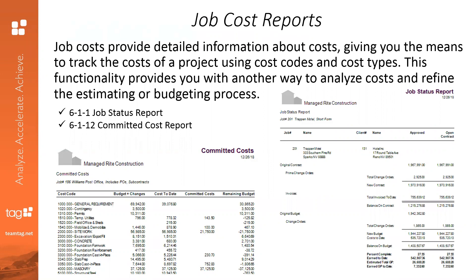A couple of the widely commonly used reports are the Job Status Report and the Committed Cost Report. The 6-1-1 Job Status Report is a great snapshot of how your jobs are doing — it shows the original contract, any approved change orders, your new contract, what's been invoiced to date, your new balance, cost to date, change order costs, and your new budget at the bottom.